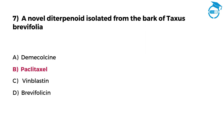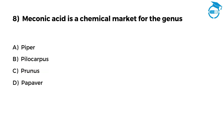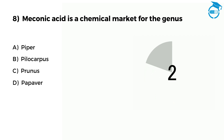You are participating really well in the test. Let us see if you can answer the next one. Mechanic acid is a chemical marker for the genus. Option A: Piper. Option B: Pilocarpus. Option C: Prunus. Option D: Papaver. Post your answer in comments. The right option is D, that is Papaver.